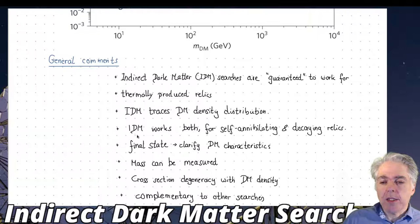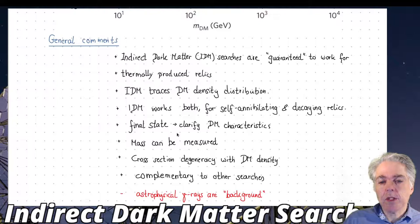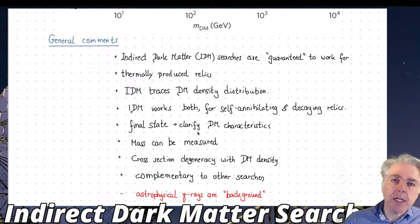The other nice thing about indirect dark matter is that it's working both for self-annihilating and decaying relics. Decaying relics, for example like Gravitinos, would be invisible for any other channel, only visible through the decay process in late stages like now. The spectroscopy of the final state gamma ray emission would shed light on the dark matter characteristics because this spectrum depends strongly upon the way that the dark matter particle annihilates.